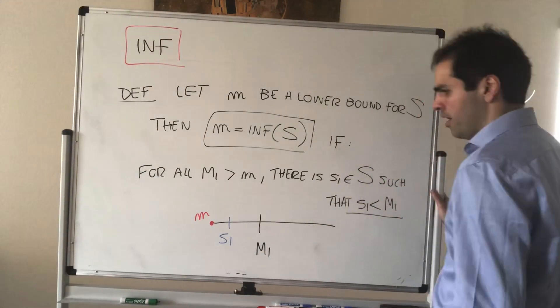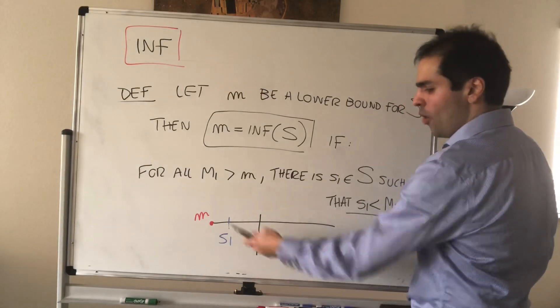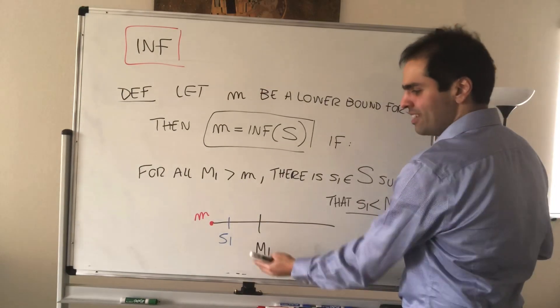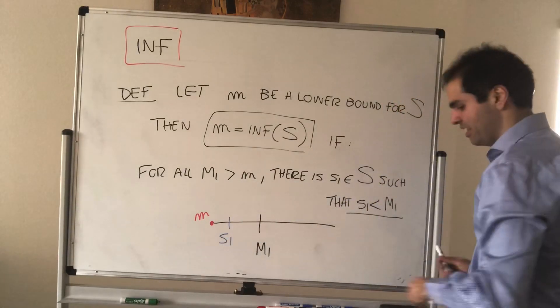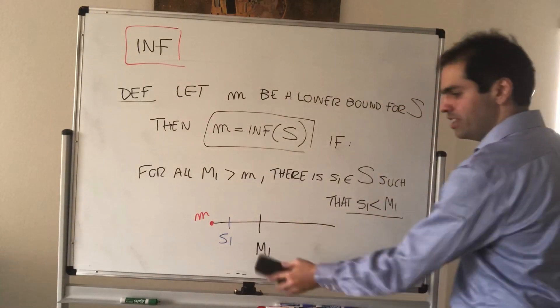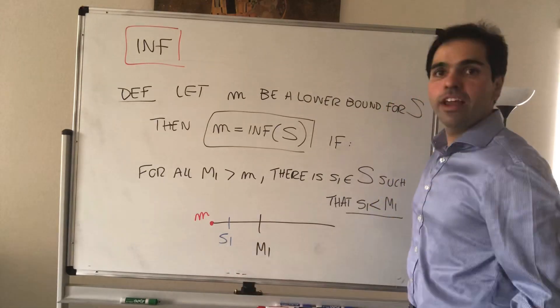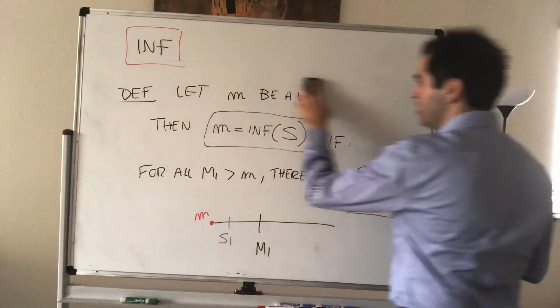So, suppose M1 says, oh, I'm the new lower bound, then S1 says, oh, no, you're not, because I'm smaller than you. And, again, if you did not get the lowest grade, there's someone else who got a lower grade than you.